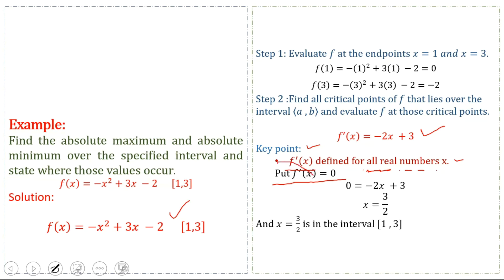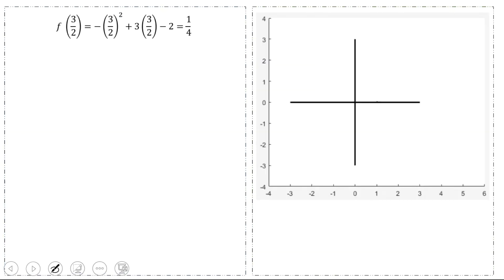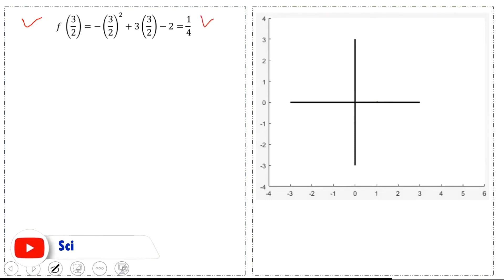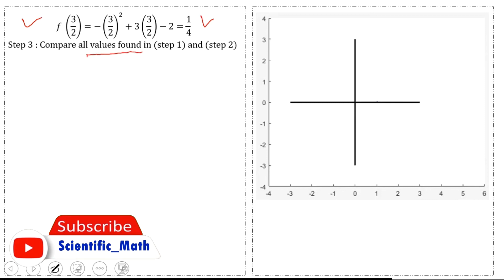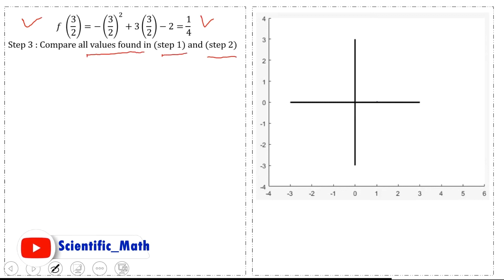After setting f'(x) = 0, we get x = 3/2. This is the critical value, and x = 3/2 lies within the given interval [1, 3]. We evaluate the function at x = 3/2 and get f(3/2) = 1/4. Next, we compare all values found in steps 1 and 2.